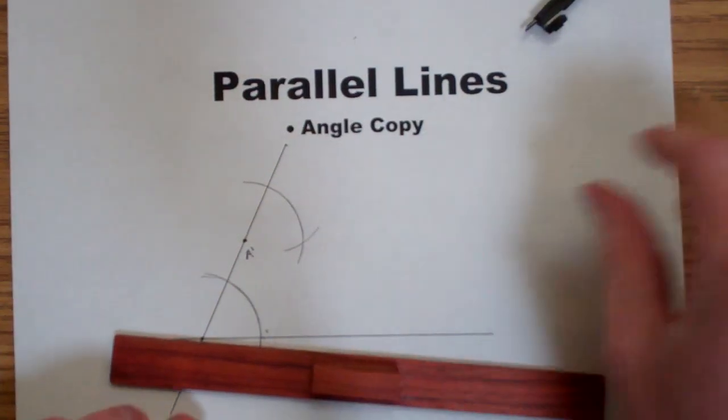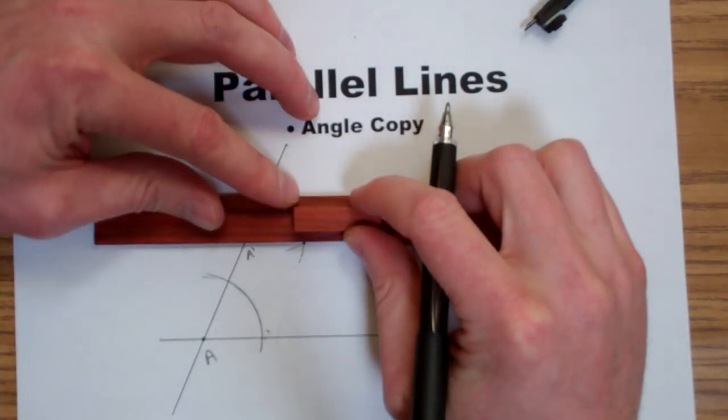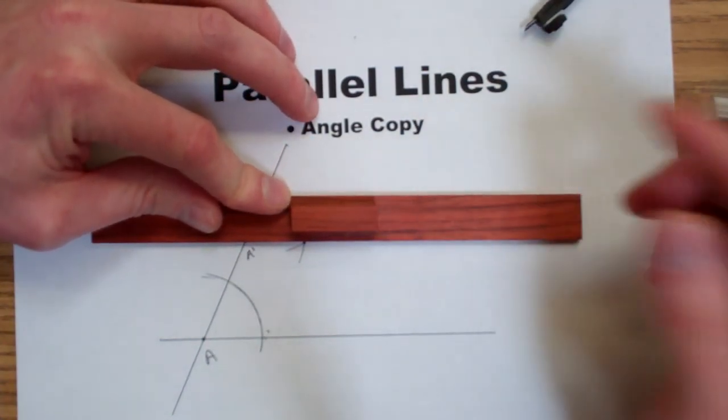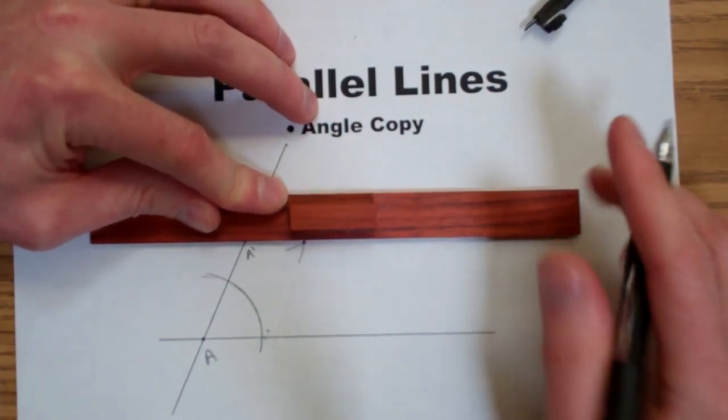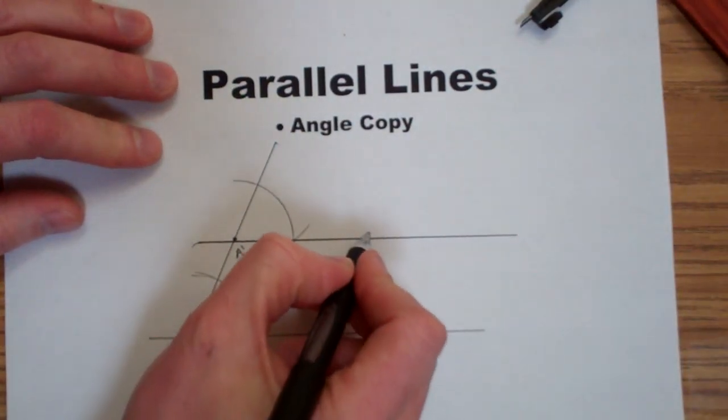Now I have two points, A prime and this new point. After I connect them, I have two parallel lines.